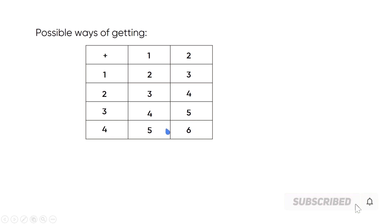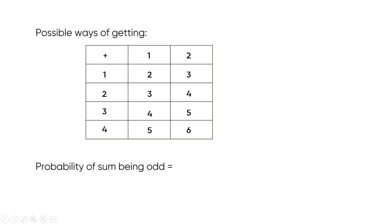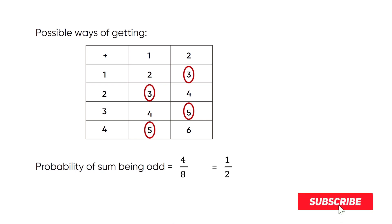Now for the first question — the probability that the sum is odd. The odd sums we obtained are 3, 3, 5, and 5. So there are four outcomes with an odd sum. The total number of outcomes is 8. Therefore, the probability of the sum being odd is 4 by 8, which simplifies to one by two.